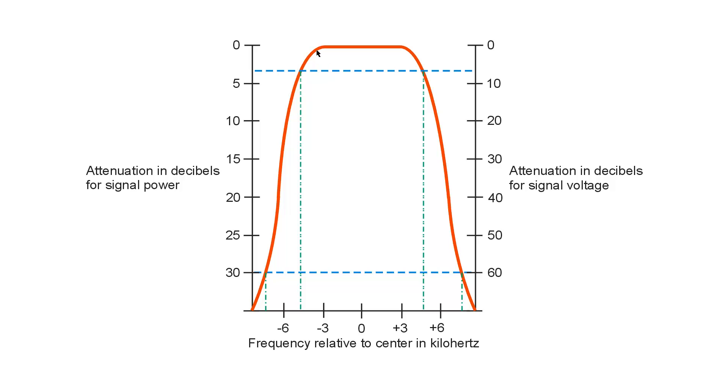The skirt selectivity in general refers to how steep the transitions are between the maximum gain or least attenuation, usually considered to be zero decibels of attenuation for either power or voltage, and the ultimate attenuation, which one can only speculate what that might be.